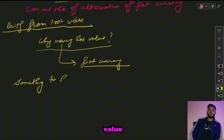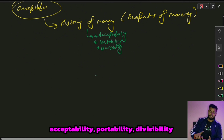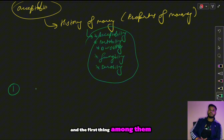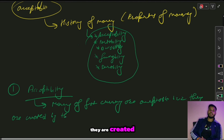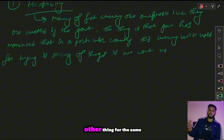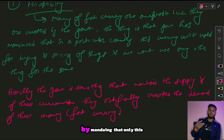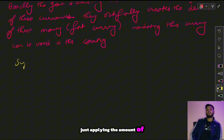The properties of money we studied were acceptability, portability, durability, and fungibility. The first was acceptability. Money and currency are acceptable because they are created by the government. The government has mandated that in a particular country this currency will be used for buying and selling. The government maintains the supply and demand of currency, and due to its laws money is acceptable.